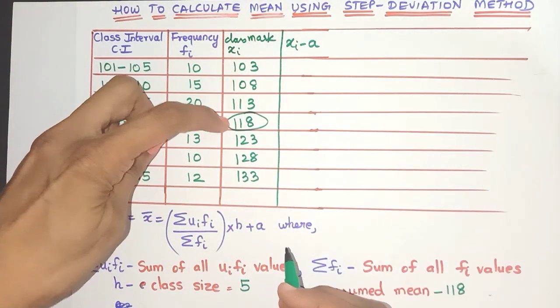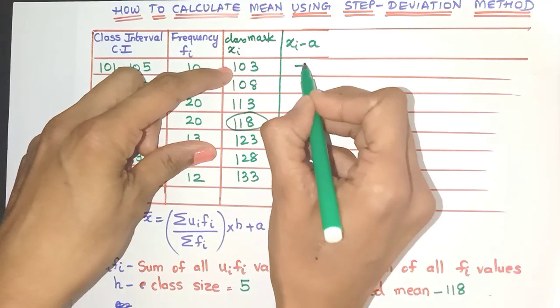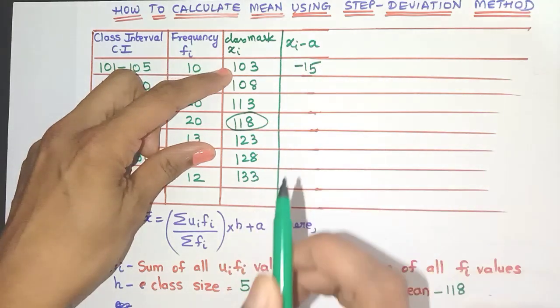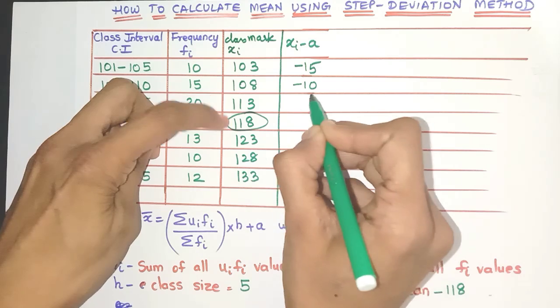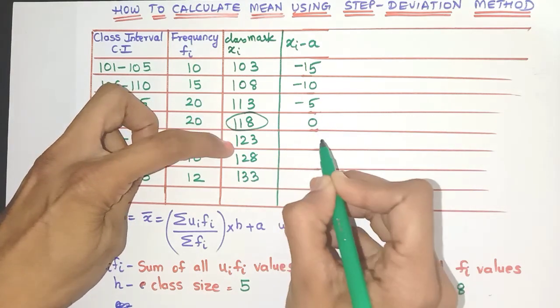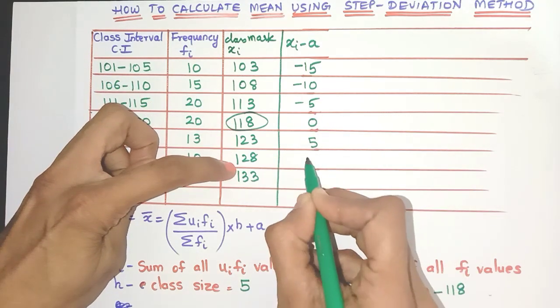So let's quickly do xi minus a. So 103 minus 118, yes, I'll get minus 15. Remember, there is a minus sign. So this here I'll get minus 10, here I'll get minus 5, 0, this will be 5, this will be 10 and 15. Very carefully do the calculations.